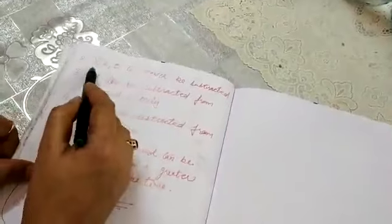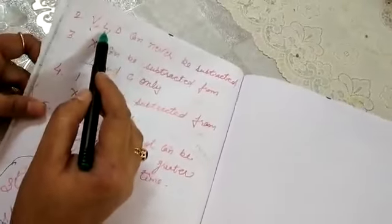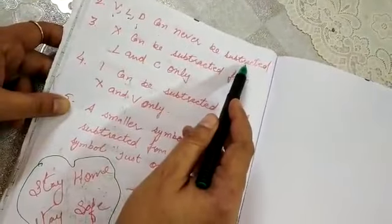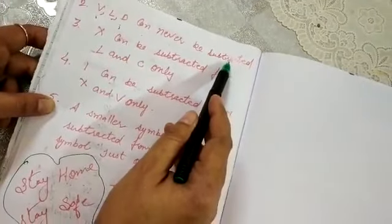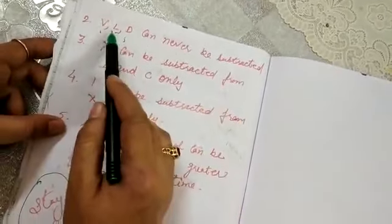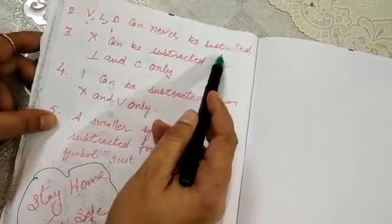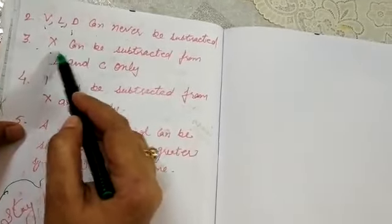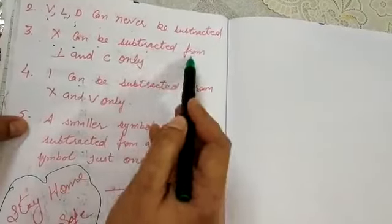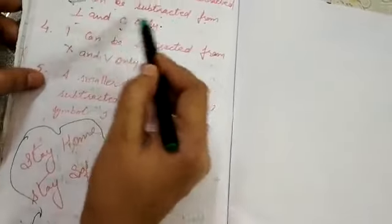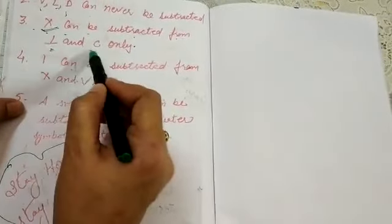The second property is: V, L, and D can never be subtracted. The third property is: X can only be subtracted from L and C only.